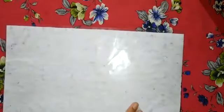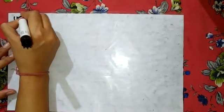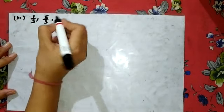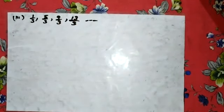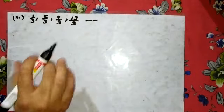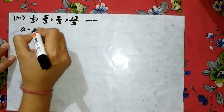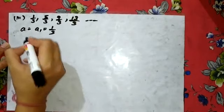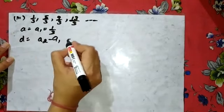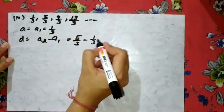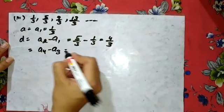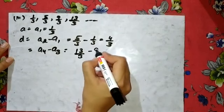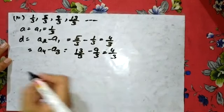Now I will discuss the third part. That is 1 by 3, 5 by 3, 9 by 3, 13 by 3. To find out, no need to be panicked. It will be very easy for you. Write here A1 is 1 by 3. D is your A2 minus A1, that is 5 by 3 minus 1 by 3, which equals 4 by 3. Similarly, A4 minus A3, that is 13 by 3 minus 9 by 3, which equals again 4 by 3.